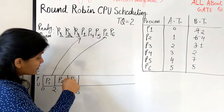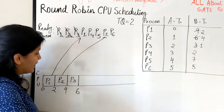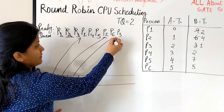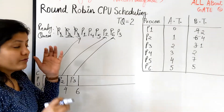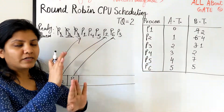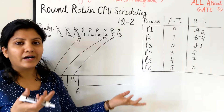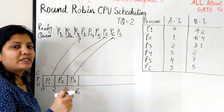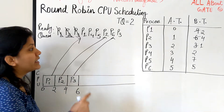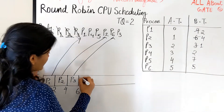P3 ran from 4 to 6, using 2 burst units. P6 also needs burst so it goes into the ready queue. Now every other process has arrived into the ready queue — that is important. We no longer need to check the arrival time. Now we just keep cycling through the ready queue.